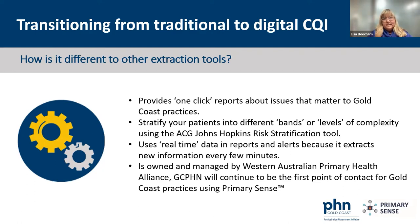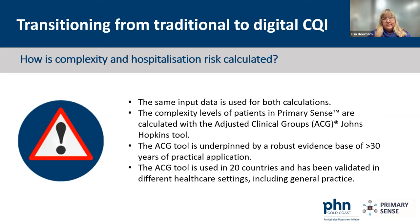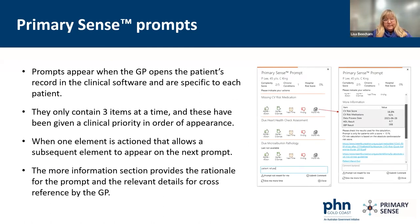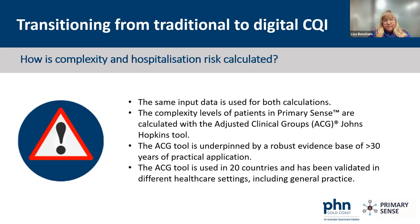Complexity and hospitalisation risk is calculated by the same input data and complexity bands as the patients in Primary Sense, calculated by the Adjusted Clinical Group — a Johns Hopkins tool that's been in existence for over 30 years, used in 20 different countries and validated in lots of different healthcare settings including general practice. It's also been used in the UK in a general practice setting similar to Australia.